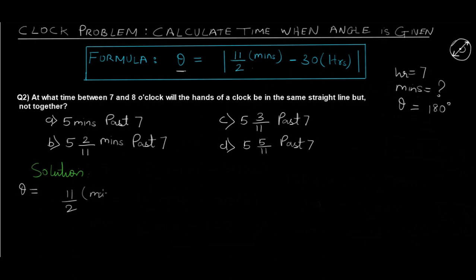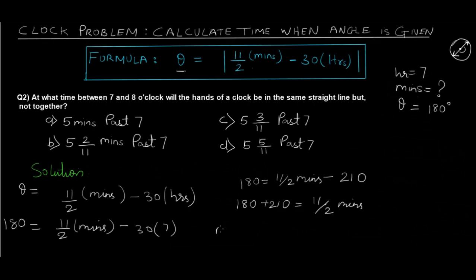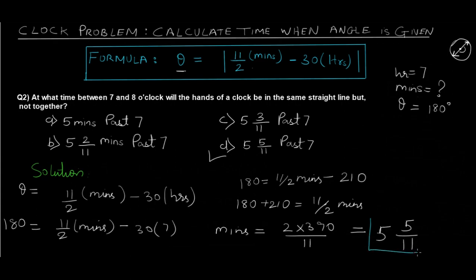Applying the formula: 180 = 11/2 × minutes − 30 × 7, so 180 = 11/2 × minutes − 210. Therefore 180 + 210 = 11/2 × minutes, giving 390 = 11/2 × minutes, and minutes = 2 × 390 / 11. Solving this gives 5 5/11, so the final answer is 5 5/11 minutes past 7, which is option D.